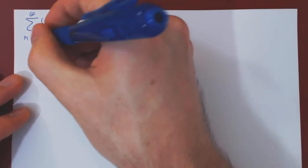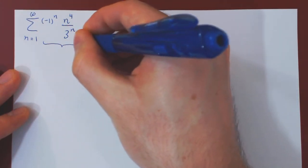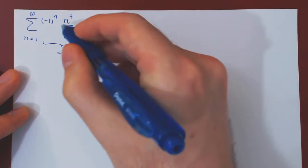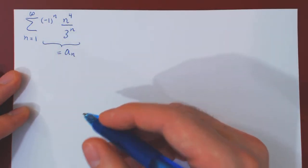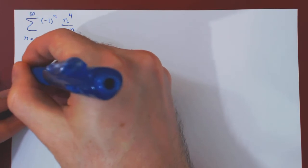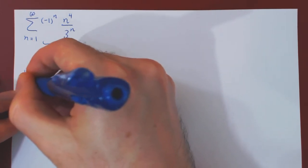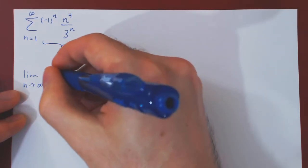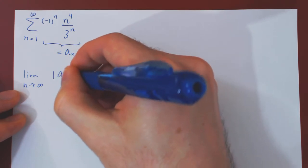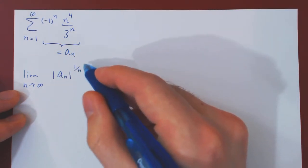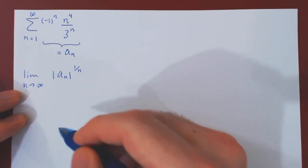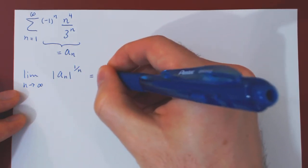So let's apply the root test. So this is a_n, the terms we are summing over, and if you recall the root test says to look at the limit as n tends to infinity of the absolute value of a_n raised to the power of 1 over n. So the nth root of a_n in absolute value. So let's replace.